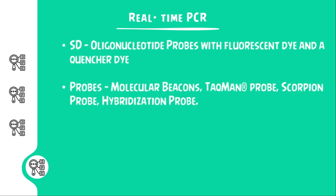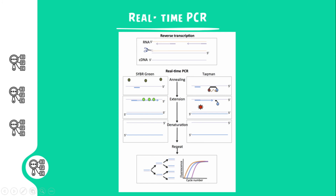The specific detection method uses specific probes. Probes like TaqMan and molecular beacons are used. These probes are oligonucleotides with fluorescent dyes and a quencher dye. They specifically bind to a particular sequence in the strand and emit light in the form of fluorescence at the end of each cycle after being detached. This is a comparison of the types of real-time PCR, where SYBR Green is non-specific in binding whereas TaqMan is very specific in binding to the strand.